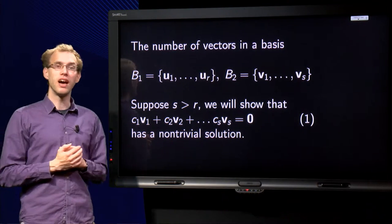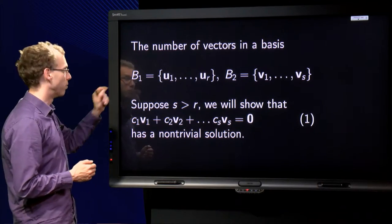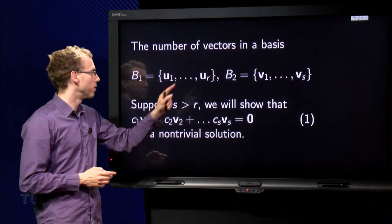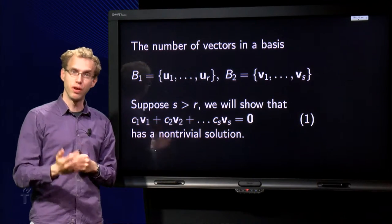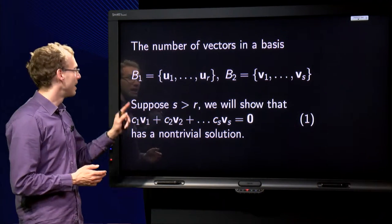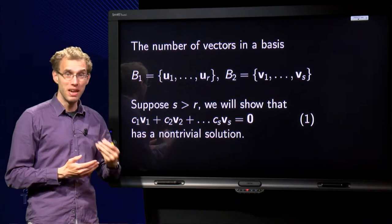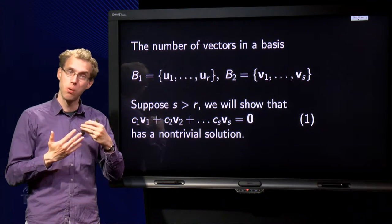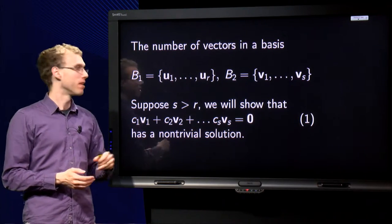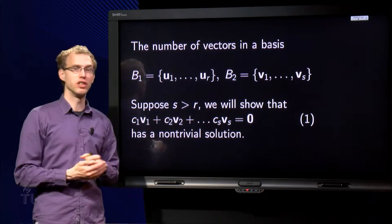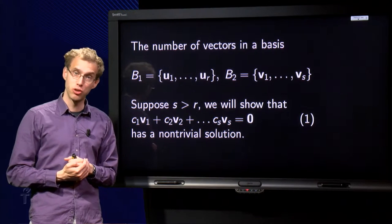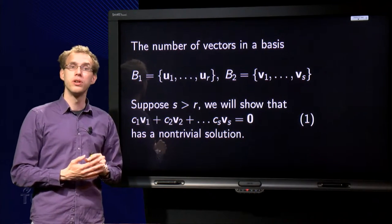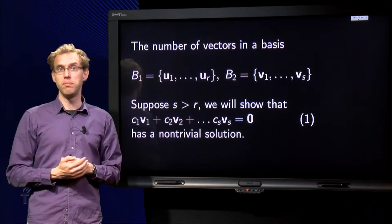Suppose I have two bases for a subspace: a basis B₁ consisting of u₁ up to uᵣ, and a basis B₂ consisting of v₁ to vₛ. And suppose s is bigger than r, suppose my second basis contains more vectors, then we will show that this equation over here has a non-trivial solution, which means that it is not a basis after all, so that s cannot be bigger than r.